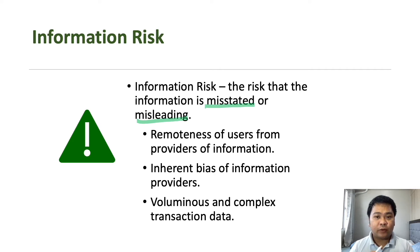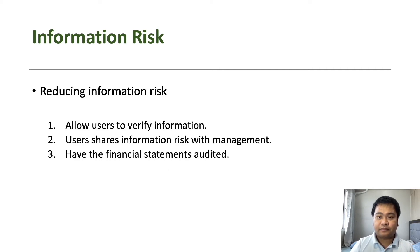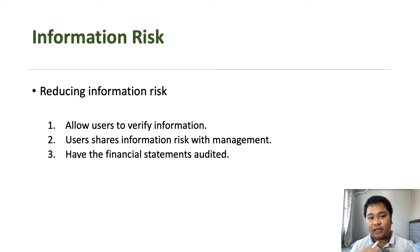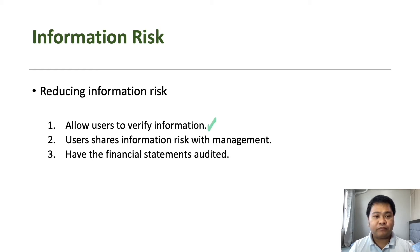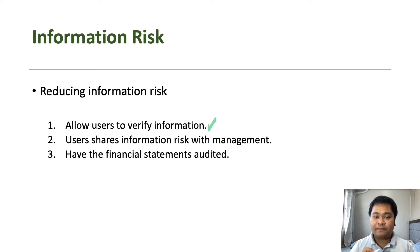What can users do to reduce this information risk and mitigate possible losses? There are a variety of ways. Number one is to allow users to verify information directly. However, this is not very efficient because there are many users of financial statements, and it would be difficult or even not feasible for companies to allow all possible users to verify their records.